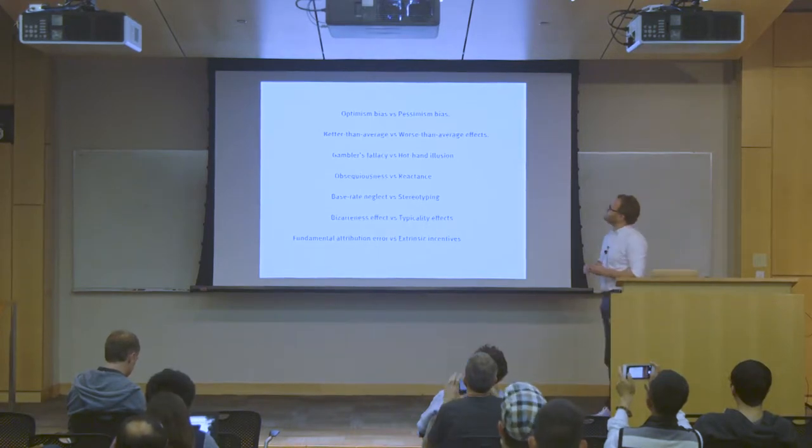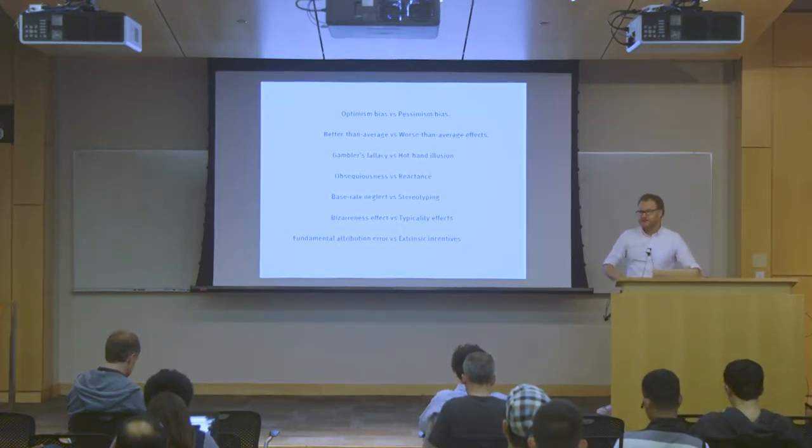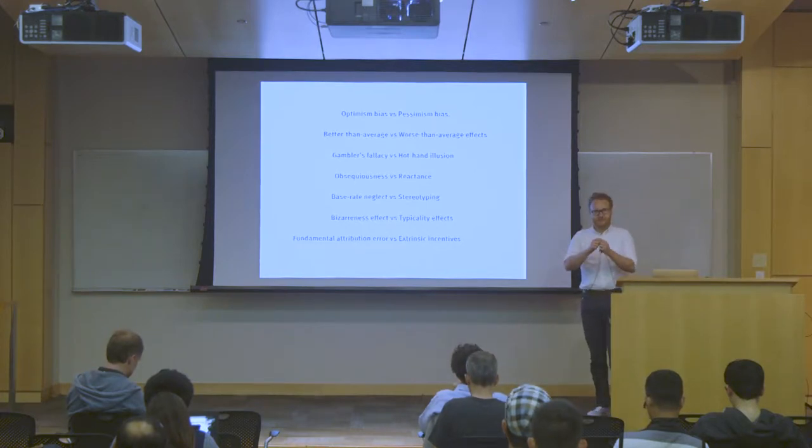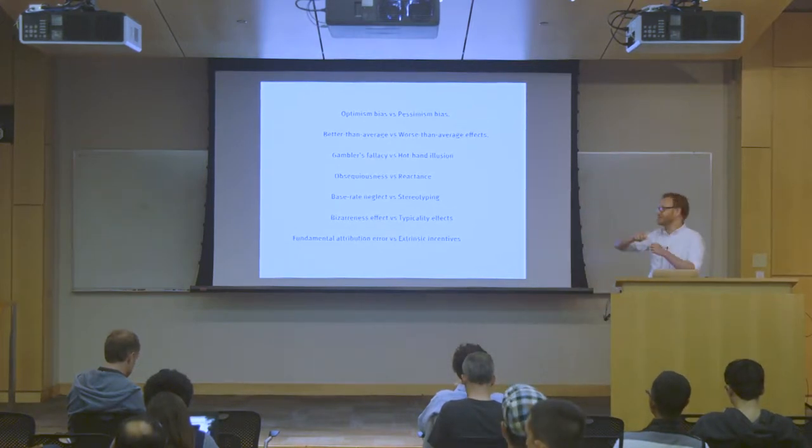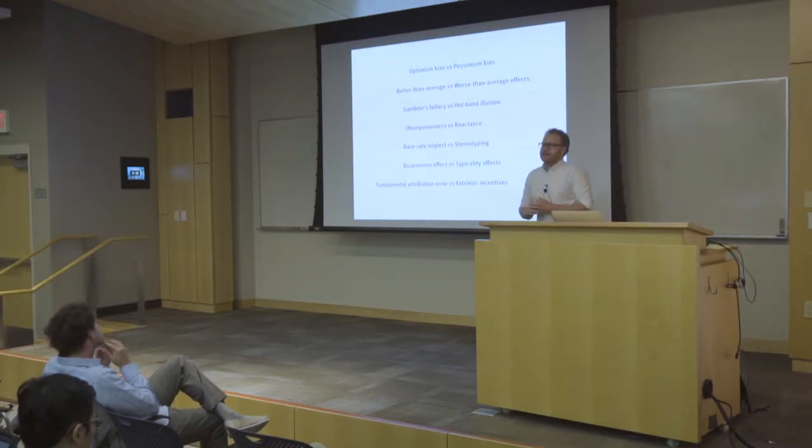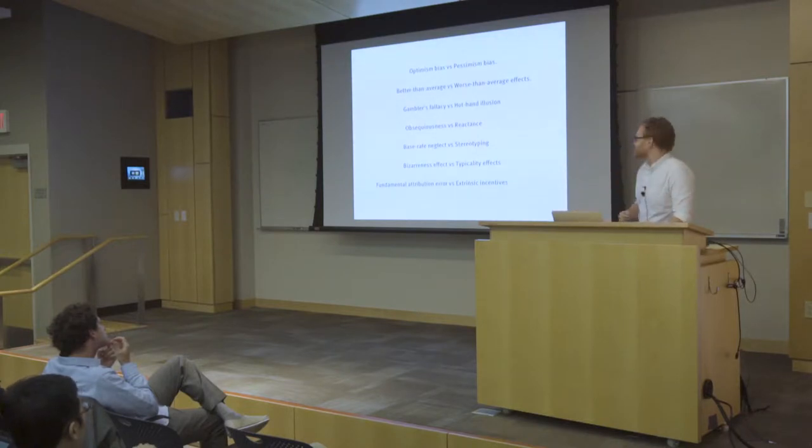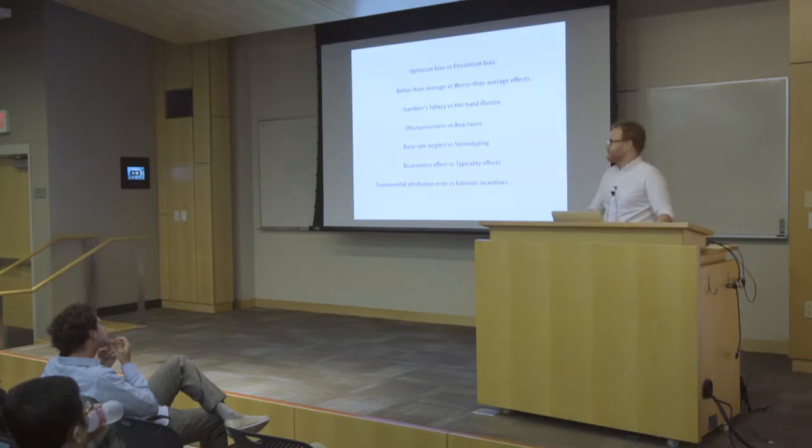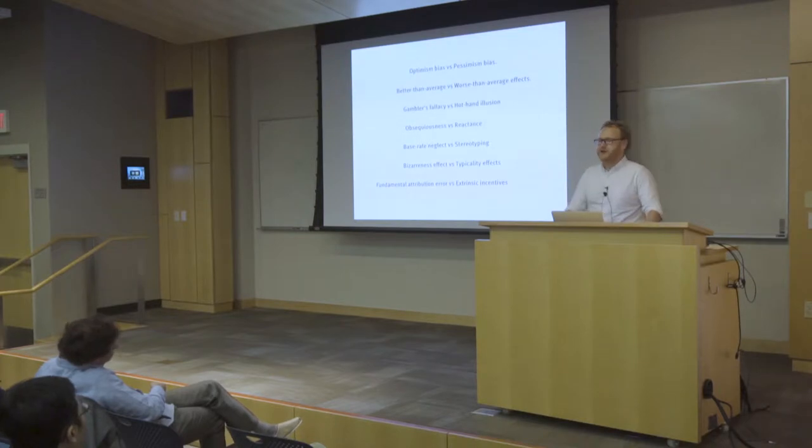The other thing that's somewhat unsatisfying is that these biases are often contradictory. There's an optimism bias and a pessimism bias. There's a better than average and a worse than average effect. There's a gambler's fallacy, which suggests that people assume sort of independent processes to be mean reverting and a hot hand illusion, in which they assume independent stochastic processes sort of drift over time. Obsequiousness suggests that people will intentionally do the things that they expect people to want them to do. And reactance says that when they expect somebody to want them to do something, they'll do the exact opposite. The base rate neglect suggests that people don't disregard entirely the base rates of things in the world and stereotyping is effectively paying too much attention to the base rates of things in the world.